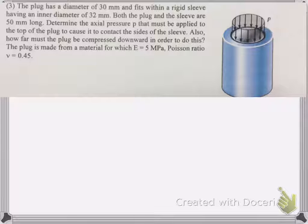We got here a plug with a diameter of 30 millimeters, and it's fitting into a sleeve with a diameter of 32 millimeters. We're trying to see if we can press this plug here to make sure that the plug and the sleeve are of the same radius or diameter. So we're trying to figure out how far must the plug be compressed in order to do it.